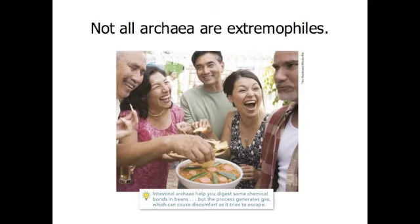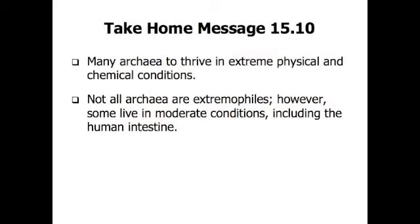Not all archaea are extremophiles — many live in places you would find comfortable. Beans are notorious for producing gas in the intestine, but archaea are the culprits. Methane-producing archaea produce an enzyme that targets the carbohydrate bonds in beans that are not broken down well by any human enzyme. As a result, the archaea in your intestine digest most of these carbohydrates, but in the process they produce gases that, as they escape the digestive system, can cause considerable distress. Many archaea can thrive in extreme physical and chemical conditions, but some live in moderate conditions, including the human intestine.